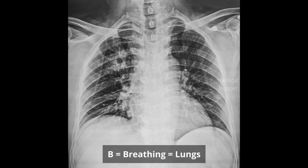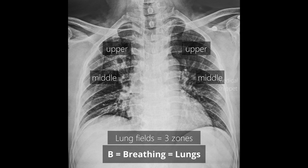Next we move on to B. B stands for breathing, that is, it denotes the lungs. Here we have to look for any lung pathology in the bilateral lung fields. For the purpose of description, lung fields are divided into three zones, namely upper, middle, and lower. One should remember that these zones are not lobes of lung — zones are different from lobes of the lung.